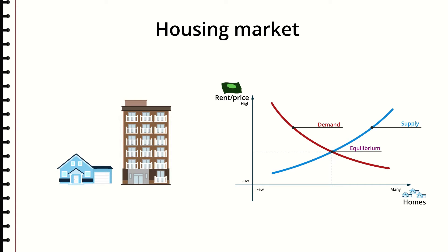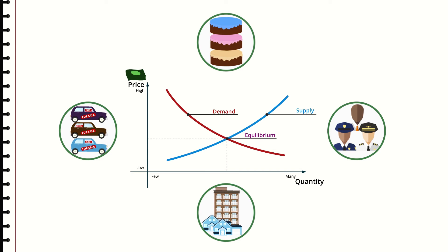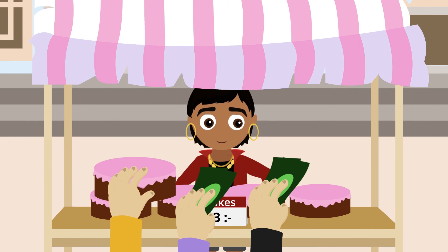There's a housing market where the supply is all the houses and apartments that someone might want to sell or rent, and the demand is everyone who wants to move into those places and have somewhere to live. Different markets work differently. This model with supply and demand is the basis for all markets but it's not the full picture. Work and housing are things that everyone needs, so these markets are something that most countries choose to influence through political decisions and laws. It's not so common to see a political debate or a new law regulating cakes.